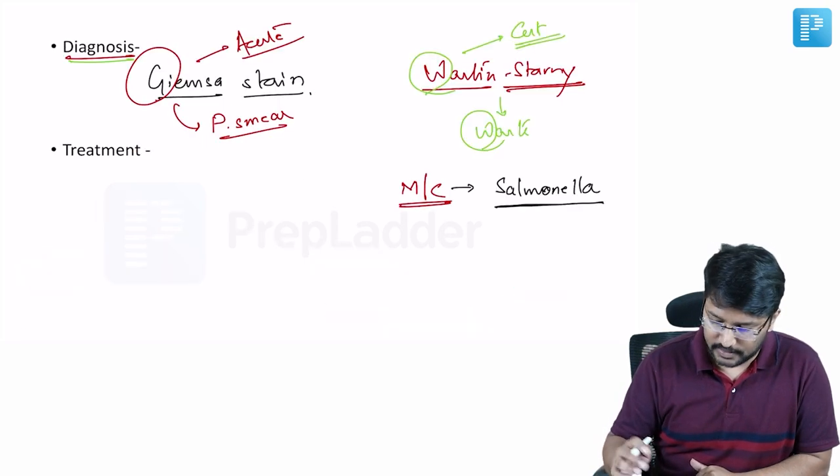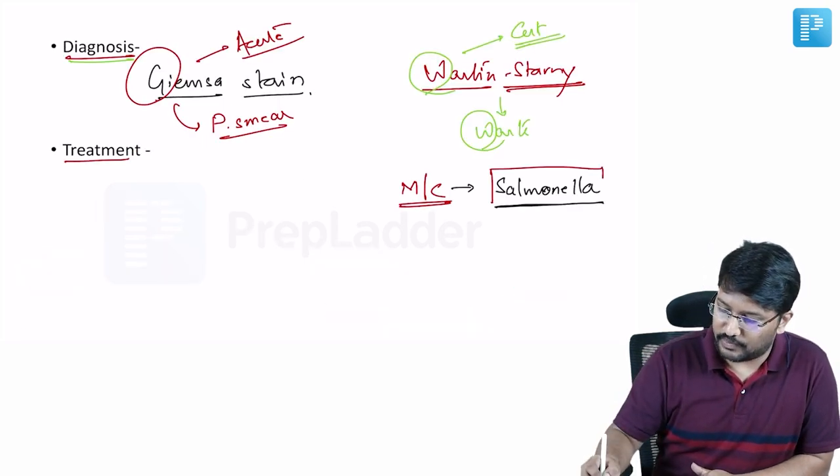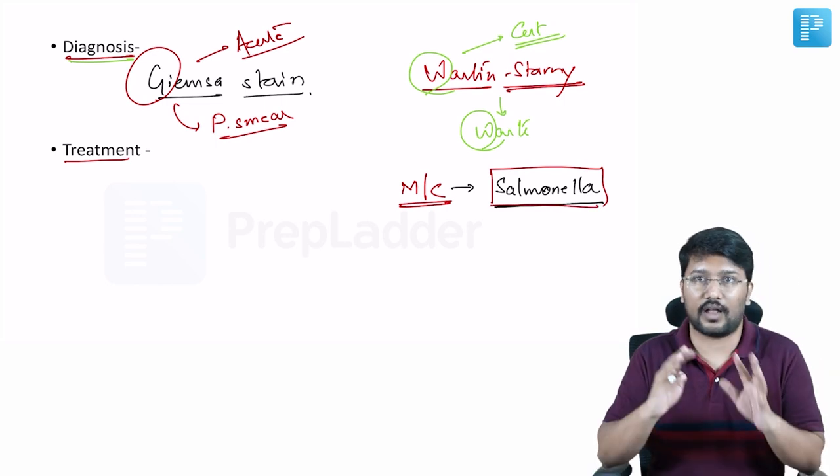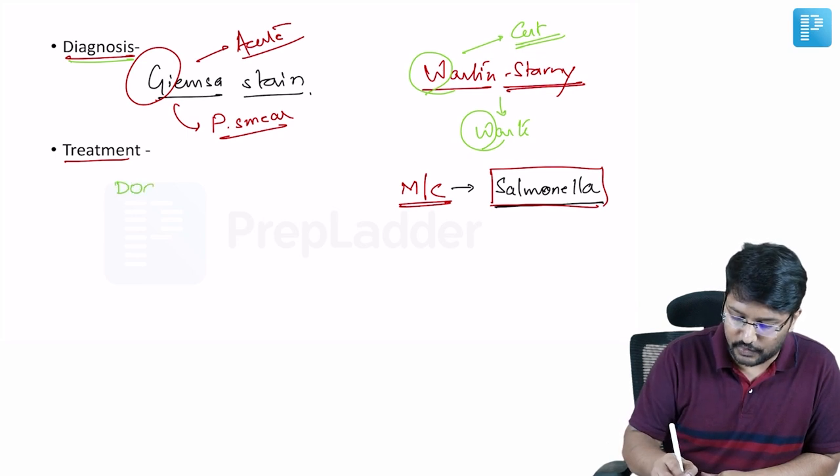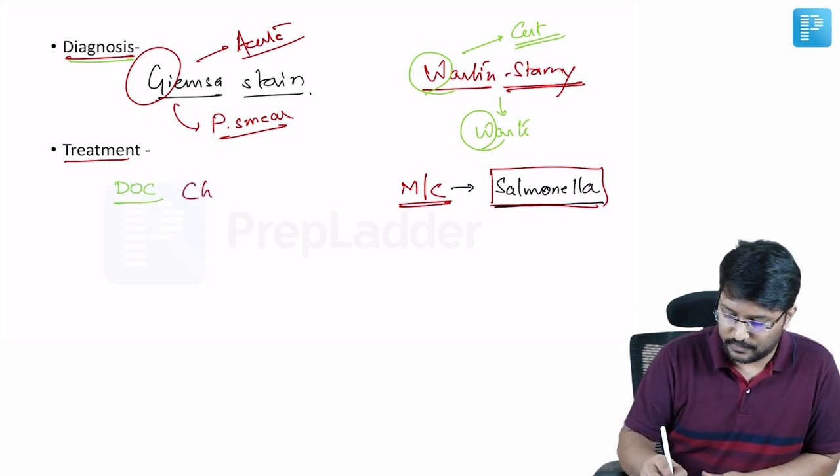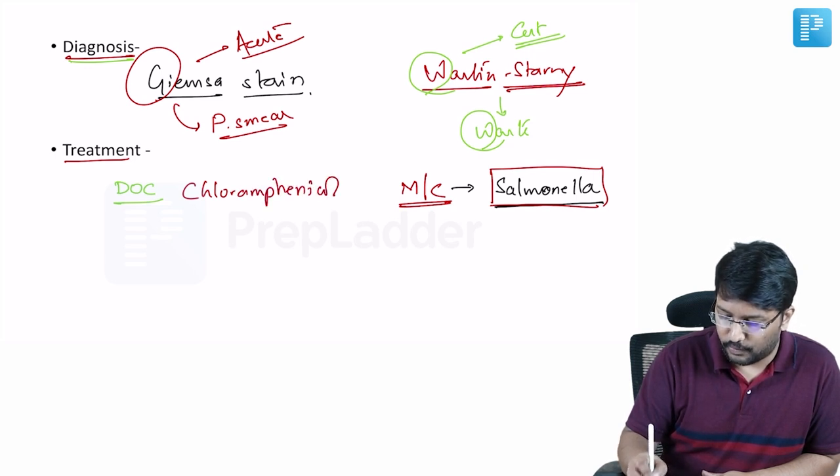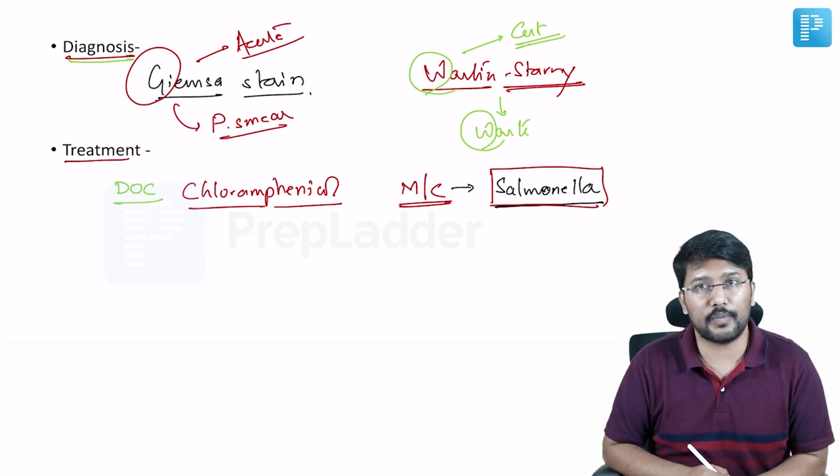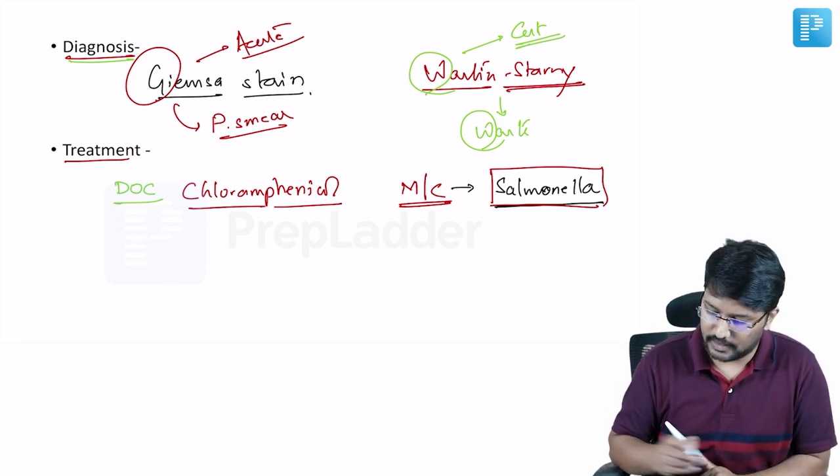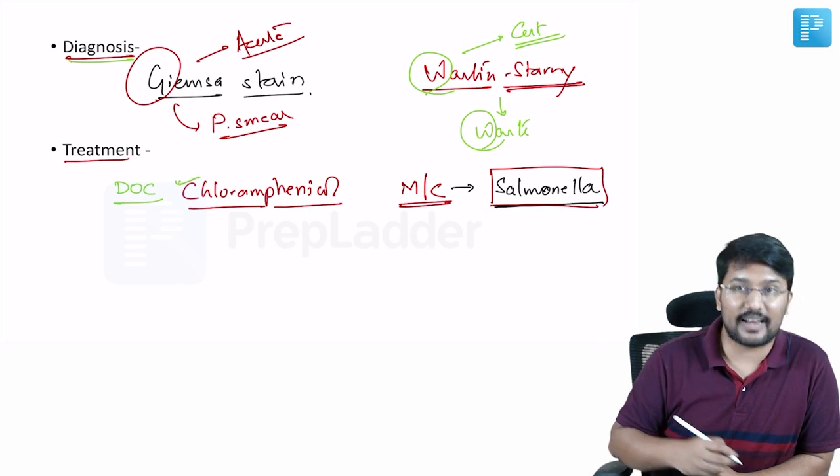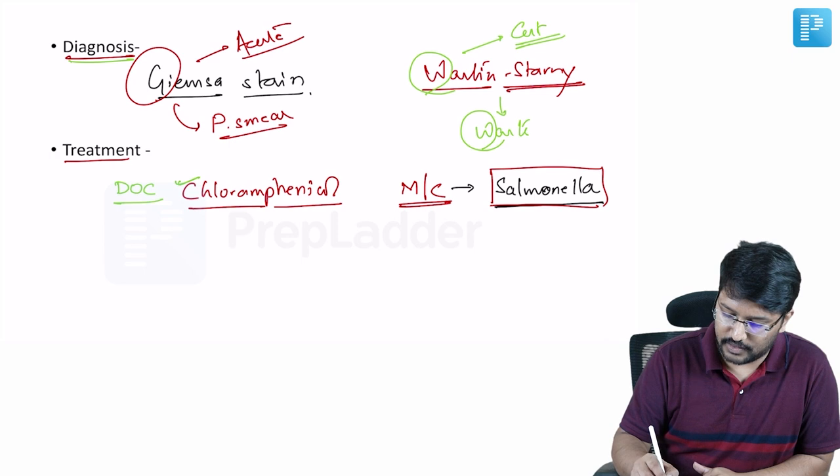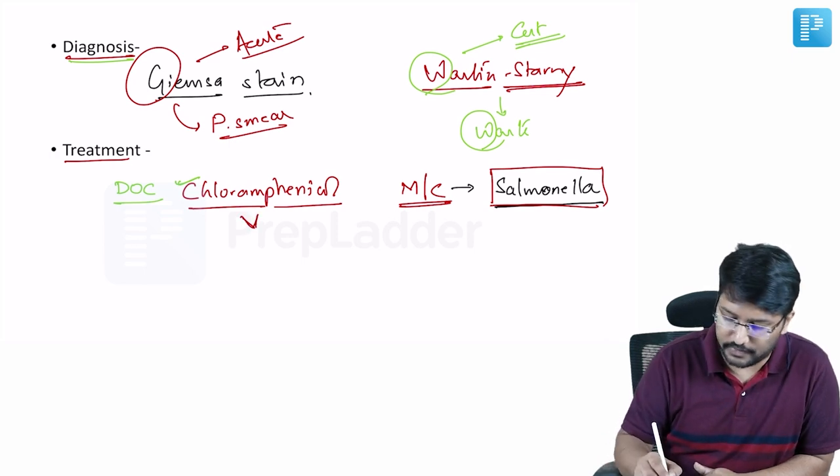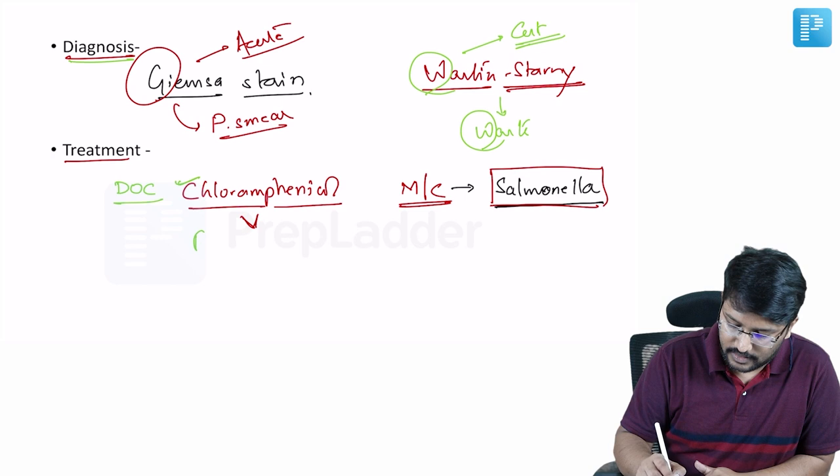Now coming to its treatment, we have to bear in mind that we are also talking about a possible co-infection with Salmonella. So our antibiotic regimen should focus on that. So based on that the traditionally described drug of choice was chloramphenicol because this covered both the organisms, Bartonella basilliformis as well as Salmonella. But now that the chloramphenicol resistance is at the peak for Salmonella.